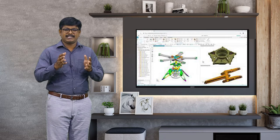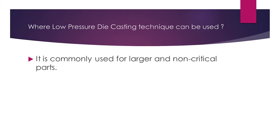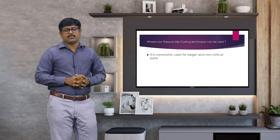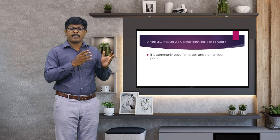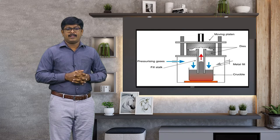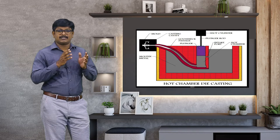Initially we design the product and then execute it. Low pressure die casting is commonly used for larger and non-critical parts — wherever we need a higher quantity or wherever the parts are not critical, we can choose low pressure die casting techniques.